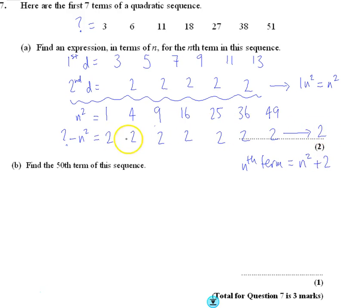If this gave us a linear sequence, we'd work out that nth term with a linear sequence, and then just add it onto the n squared. In this case, we just have to write 2.